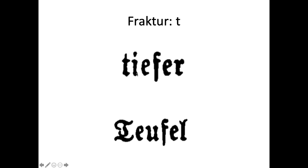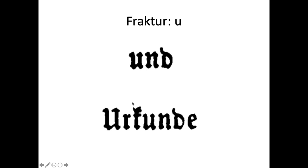The lowercase T in 'tiefer' (deeper) is identifiable. The capital T in 'Teufel' (devil) is a little tricky because it kind of looks like an I, but the capital J also looks like an I — so remember: the J-looking thing is actually the T. The U is not too bad, but when U and N appear next to each other it can be confusing. The capital U in 'Urkunde' (document) looks pretty normal. And look at that strange K in 'Urkunde.'